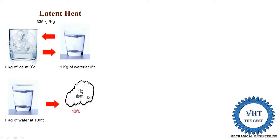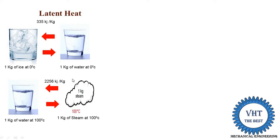Similarly, the opposite process is possible. There is 1 kg of steam in a container at 100 degrees centigrade, and we absorb certain heat from it. It converts into 1 kg of water at 100 degrees centigrade. This is known as latent heat because temperature remains the same — 100°C for water and 100°C for steam — but the phase changes from vapor to liquid. The amount of energy required is 2256 kilojoules per kg.